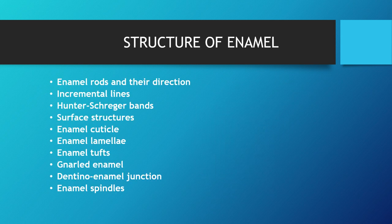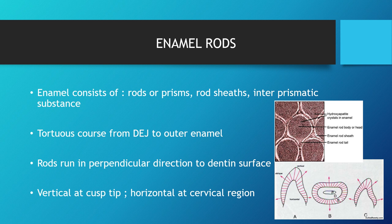Structure of enamel includes: enamel rods, incremental lines, Hunter-Schreger bands, surface structures, enamel cuticle, lamellae, tufts, gnarled enamel, enamel spindles, and the DEJ. Enamel rods consist of rods or prisms, rod sheaths, and interprismatic material. The hydroxyapatite crystals form the enamel rod head, covered by the enamel rod sheath, with an enamel rod tail and interrod substance. Enamel rods run tortuous courses from the DEJ to the outer enamel surface, perpendicular to the dentin surface.